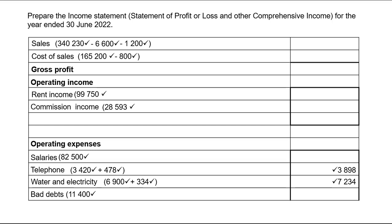Net sales will be 334,430 and cost of sales will be 164,400. Always put cost of sales in brackets — brackets indicate a negative value. Failing to do so leads students to add sales and cost of sales instead of subtracting, which is wrong. Gross profit is sales minus cost of sales, giving 168,030.